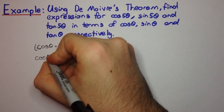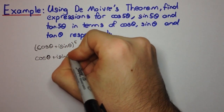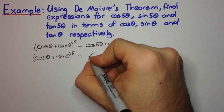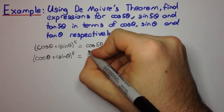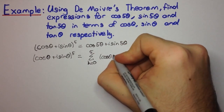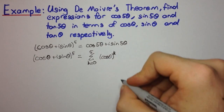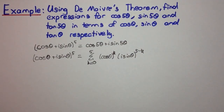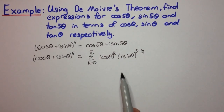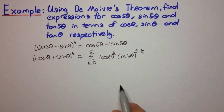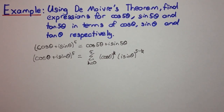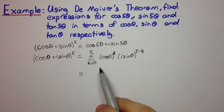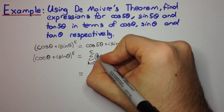If we expand this out, you know from the binomial theorem that this is equal to the sum from k equals 0 to 5 of 5 choose k, cos θ to the power k times (i sin θ) to the power 5 minus k. You might not have covered this in 3-unit depending on where you are at school, but this is the binomial theorem. If you look it up in a textbook it shouldn't be too hard to understand.